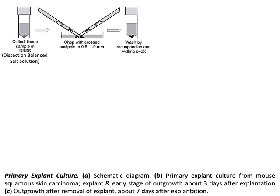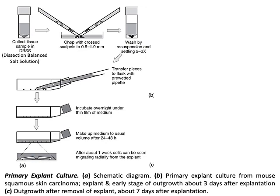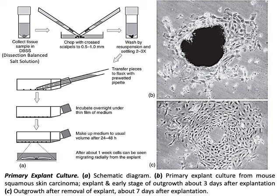Here you can see the primary explant culture schematic diagram showing the process of disaggregation. You collect tissue samples in dissection balanced salt solution, then chop the samples in a petri dish into smaller pieces, then wash out by suspension to remove excess debris. The primary explant culture from mouse squamous skin carcinoma can give outgrowth about three days after explantation, and after removing the explant — about seven days after explantation — you can see the initiation of the primary culture.